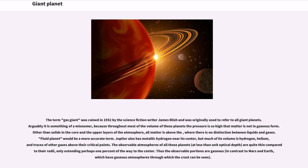The term gas giant was coined in 1952 by the science fiction writer James Blish and was originally used to refer to all giant planets. Arguably it is something of a misnomer, because throughout most of the volume of these planets the pressure is so high that matter is not in gaseous form. Other than solids in the core and the upper layers of the atmosphere,